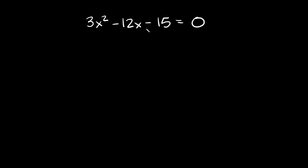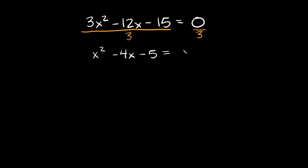Last one: 3x² - 12x - 15 = 0. We don't have a leading coefficient of 1 — we have 3 — so we divide everything by 3: x² - 4x - 5 = 0. This is not a perfect square trinomial, so add 5 to both sides: x² - 4x = 5.